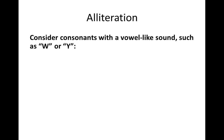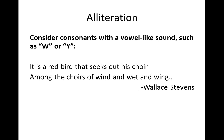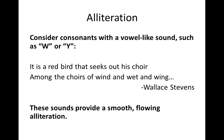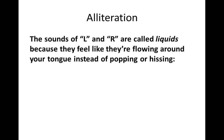Consider, for example, consonants that have a more vowel-like sound, such as the letters W or Y. From this example with Wallace Stevens, he writes: 'It is a red bird that seeks out his choir among the choirs of wind and wet and wing.' So with these W sounds in 'choir,' 'wind,' 'wet,' 'wing,' we hear a smoother, more flowing alliteration.